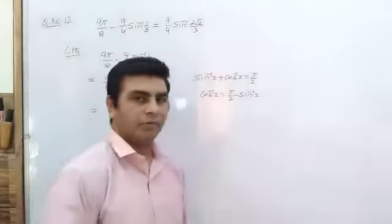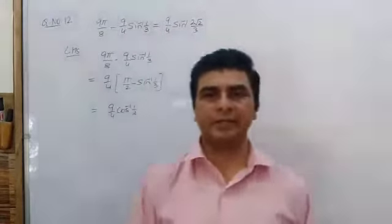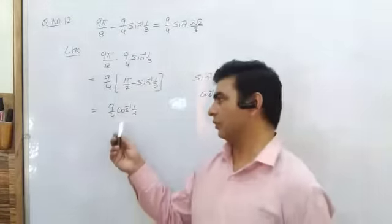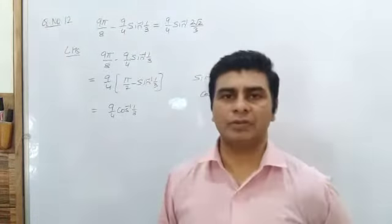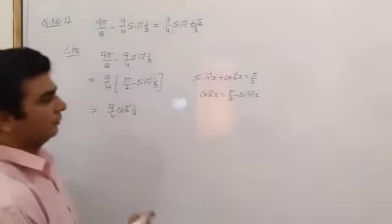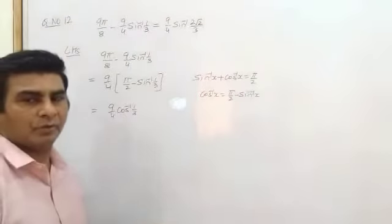But we want to prove the right hand side in the form of sin inverse function. So this cos inverse function can be changed in the form of sin inverse function by taking the substitution of cos inverse 1/3.